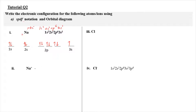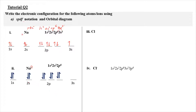Now for Na+: when there is a plus sign it means one electron is being donated. So it's going to remove the electron from the outermost shell, which is 3s1. When one electron is removed, the electronic configuration becomes 1s2, 2s2, 2p6. You draw the atomic orbital diagram as usual and fill in the orbitals to get 10 electrons in total. The 3s orbital no longer exists.